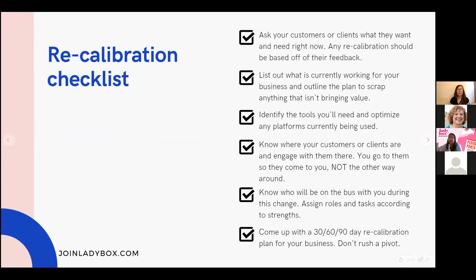Here's a recalibration checklist that will be available online after the webinar. Ask your customers where they're at and what they need — recalibrate based on that, not just what you think it should be. List out what's working, scrap what's not, and identify helpful tools. The most important step is asking customers what they need; the second most important is creating a 30-60-90 day plan. You can't roll everything out in a week or two — you need at least 90 days, but start taking actions right now.